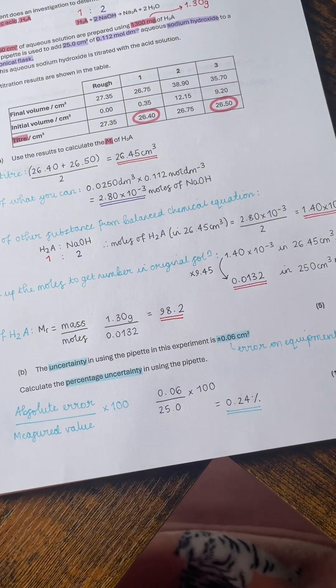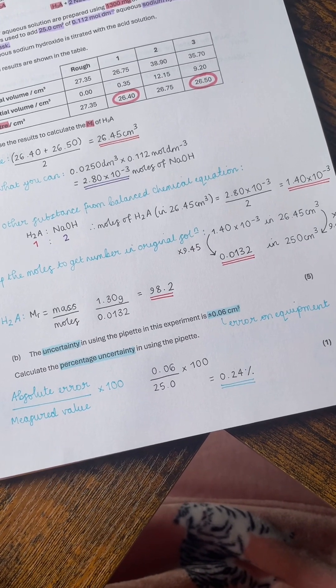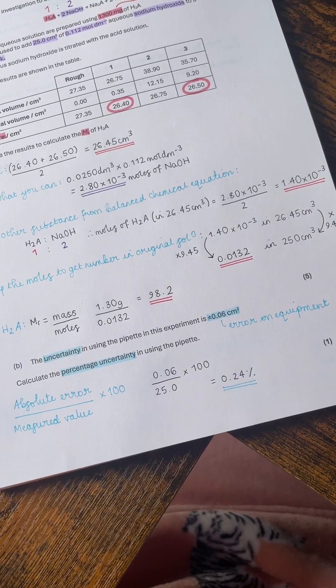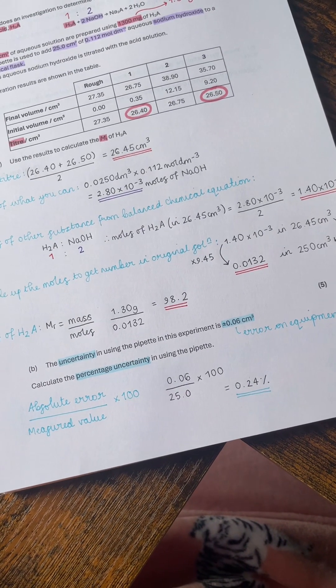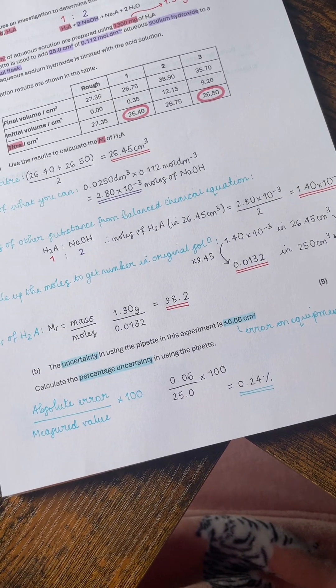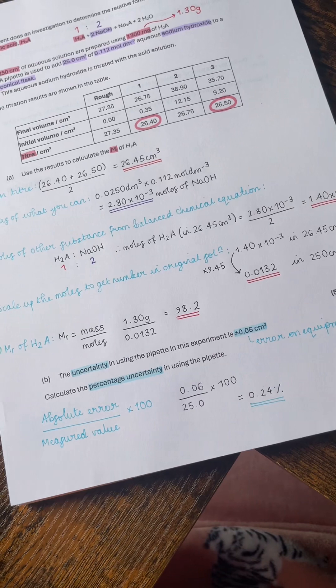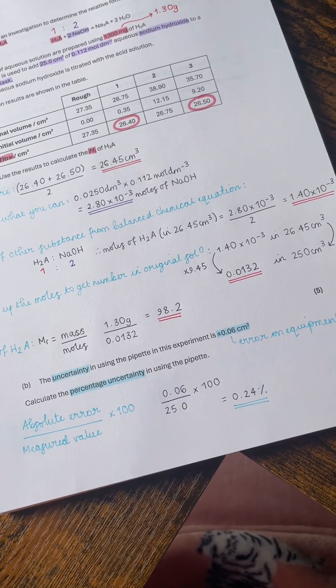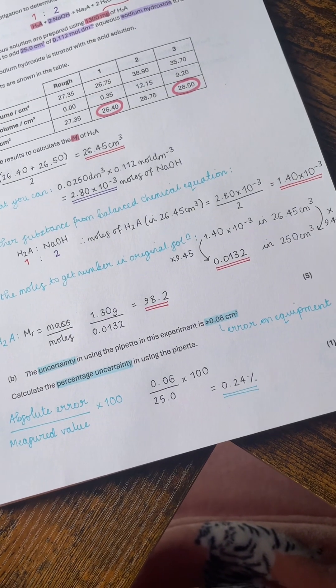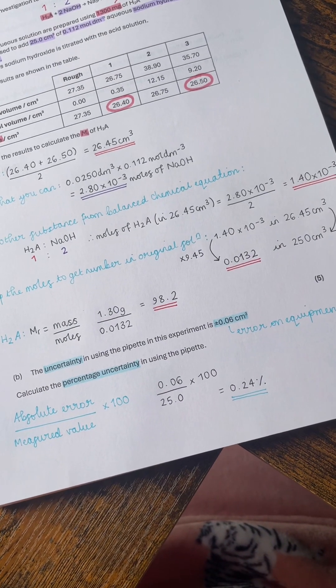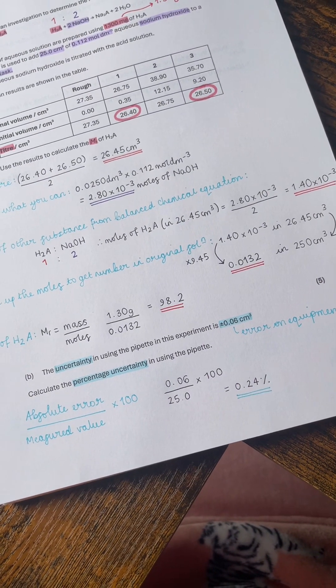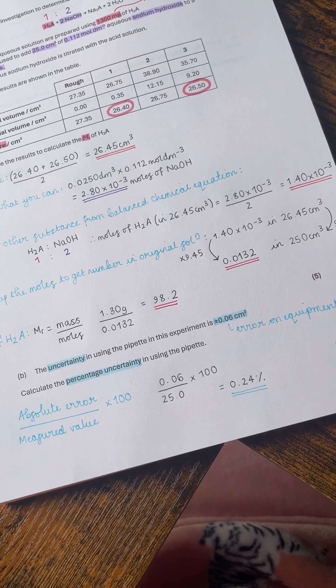When we're working out percentage uncertainty, we're thinking about the error on the piece of equipment that we're using, which in the pipette instance is ±0.06 cm³. If we therefore measured out 25 cm³ in the pipette, what we're saying is there is a chance that our percentage uncertainty when we use the pipette will be 0.24%. So that is the range in which our answer might be bang on or slightly out, not because of anything that we've done, but because the equipment itself is never going to be perfect.